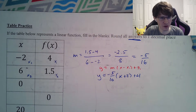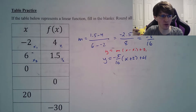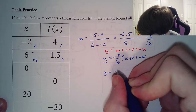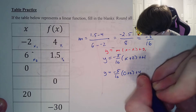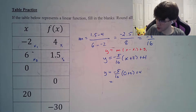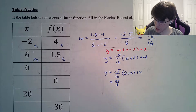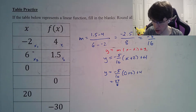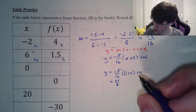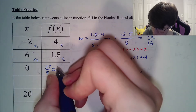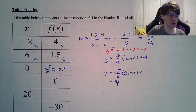To figure out the missing values, we plug in 0 — a great opportunity to use the calculator. Negative 5 over 16 times 0 plus 2, plus 4. That turns out to be 27 over 8. You can either write 27 over 8 or the approximate decimal. It says round to 1 decimal place, which is going to be 3.4. Either answer is correct.